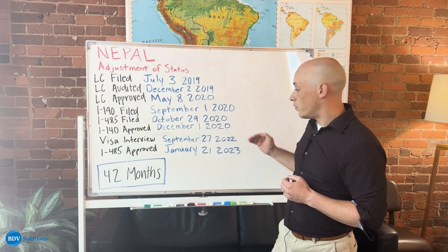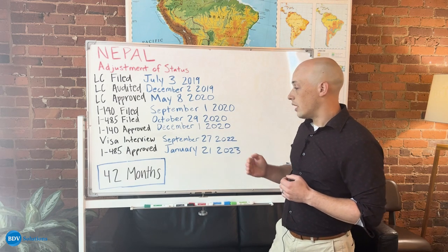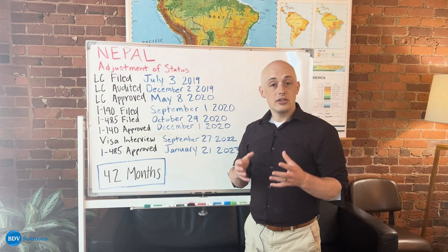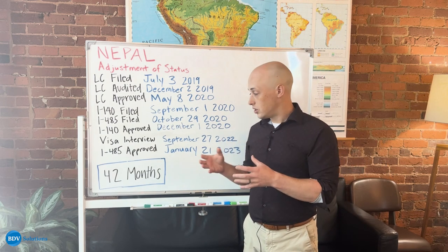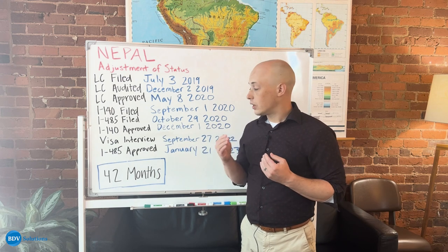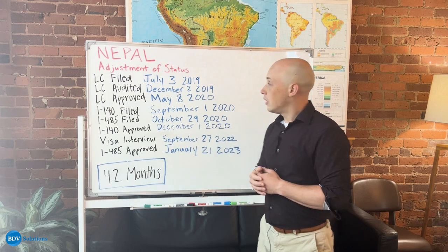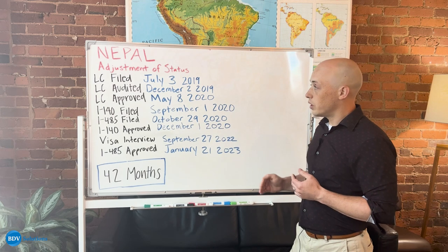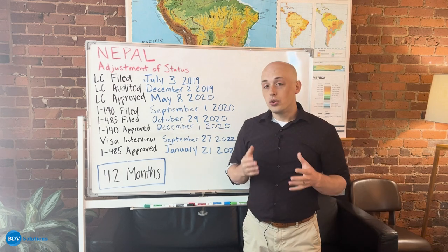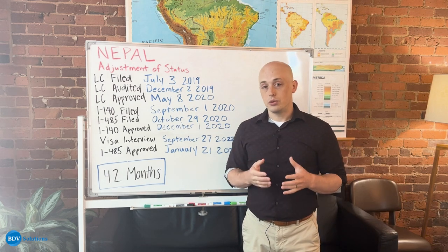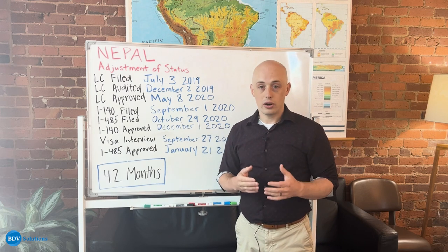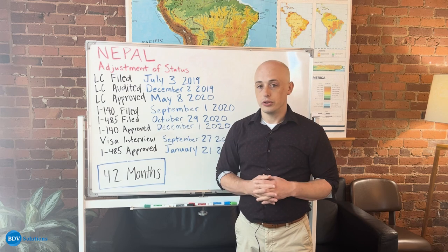As you can see, a few months later after that visa interview, the I-485 was approved. And because that is your actual green card application, along with that I-485 approval comes the green card. This person's process took 42 months adjusting status here in the United States. If you would like to learn more about the EB3 process and how BDV can help you get a green card, please subscribe to our channel to learn more.